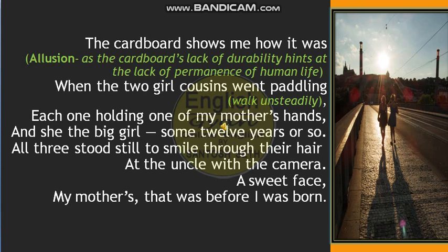Let us begin the poem's explanation. 'The cardboard shows me how it was' — this is actually an example of allusion, because cardboard lacks durability, and this is a hint for the lack of permanence of human life. So it is an example of allusion.